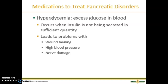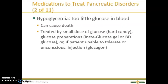Now looking at medications to treat pancreatic disorders. When the pancreas is not functioning properly, glucose levels will be either too high or too low. Hyperglycemia (high glucose) leads to problems with wound healing, high blood pressure, and nerve damage. Hypoglycemia (low glucose) can cause death because there is not sufficient energy to fuel the body's cells. Hypoglycemia is treated with small doses of glucose — hard candies, Instaglucose gel, or BD glucose — or, if the patient is unconscious, an injection of glucagon.